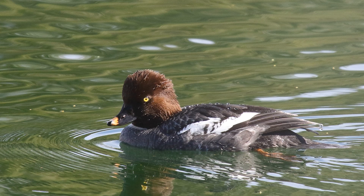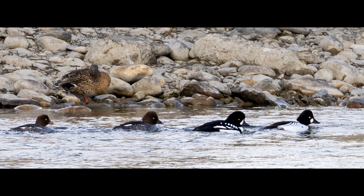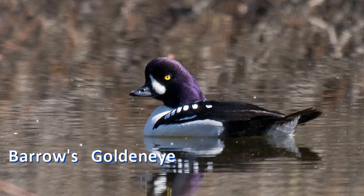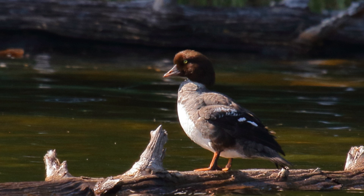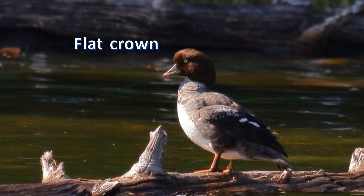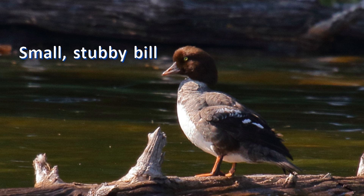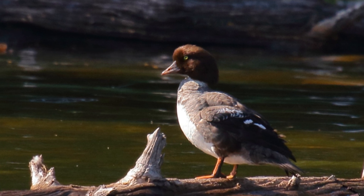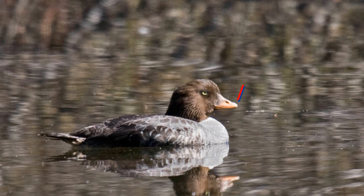Note the bill color: female common goldeneyes have mostly dark bills with a yellow tip. The head shape of the Barrow's goldeneye is subtly different. The forehead of the male is steep and reaches forward, and the crest is like a mane hanging down on the back of the neck. The head shape is more like an oval from the forehead back and down to the hind neck. The female has a similar shape, creating a rather flat top of the crown rather than pointed. The bill of the female Barrow's goldeneye is usually smaller and stubbier, and usually all yellow or mostly so.